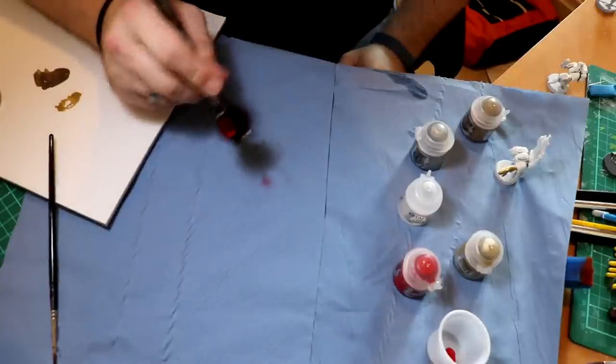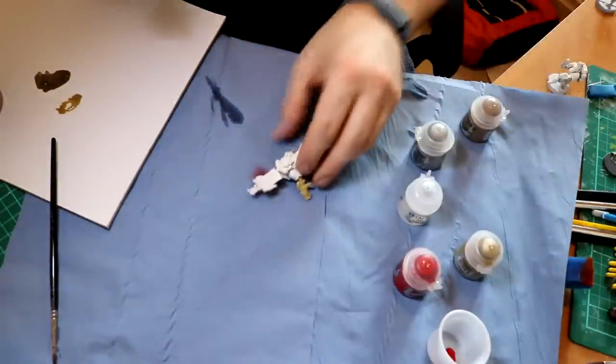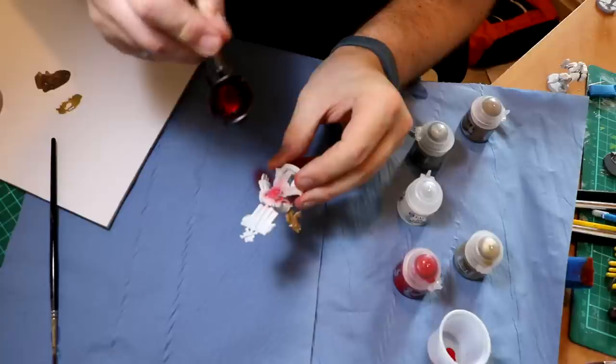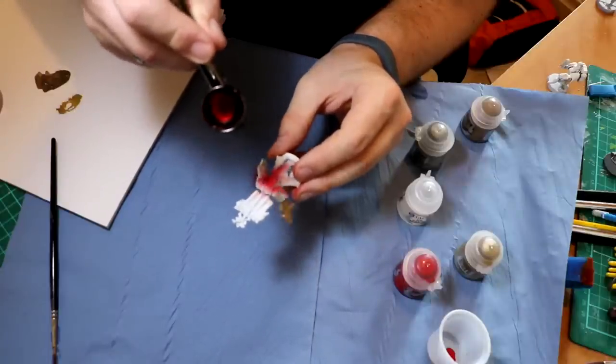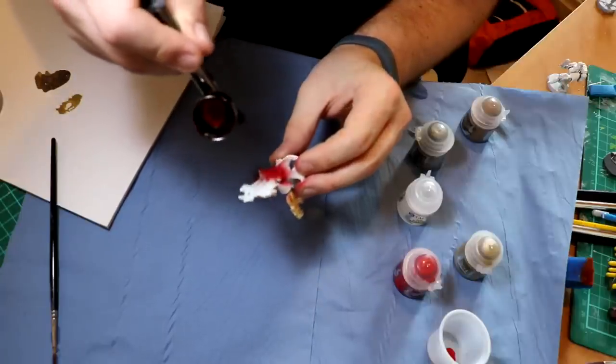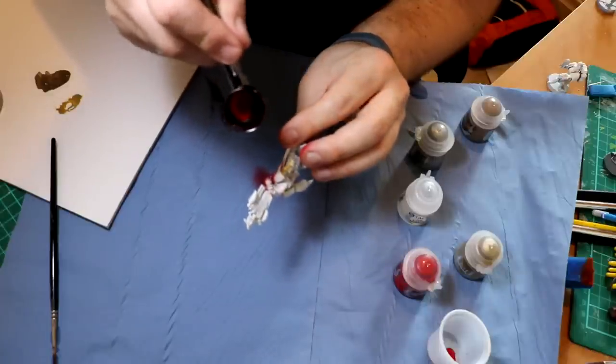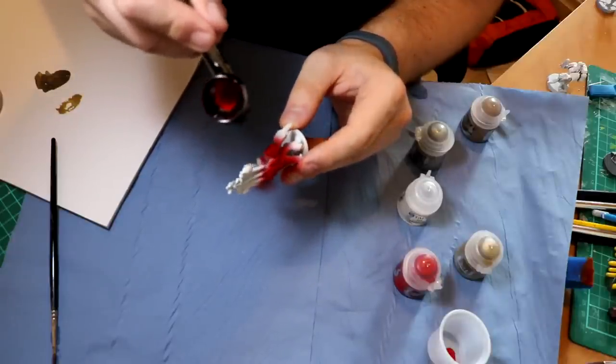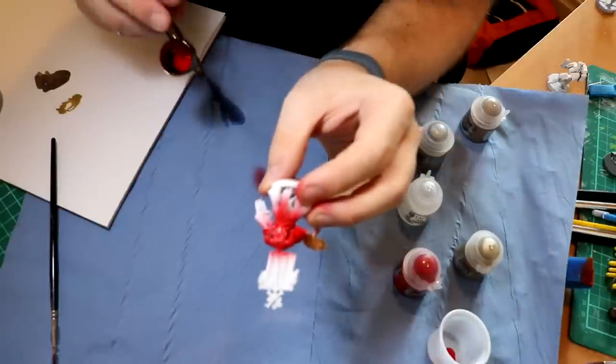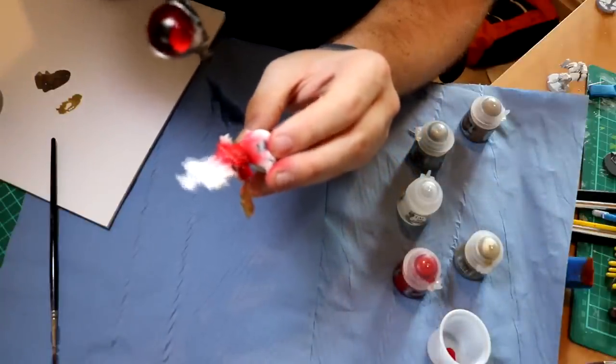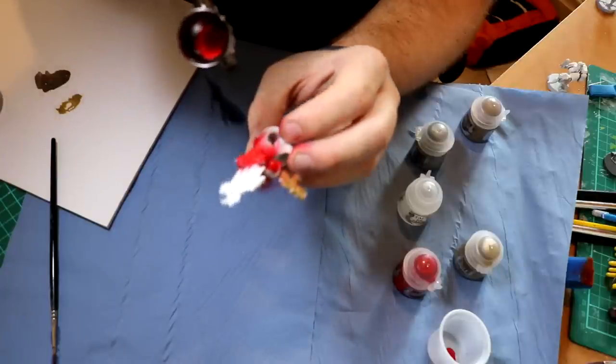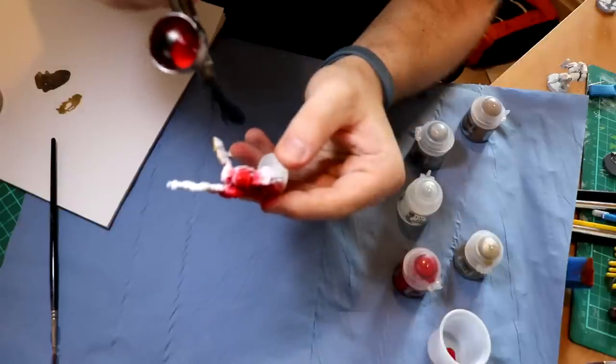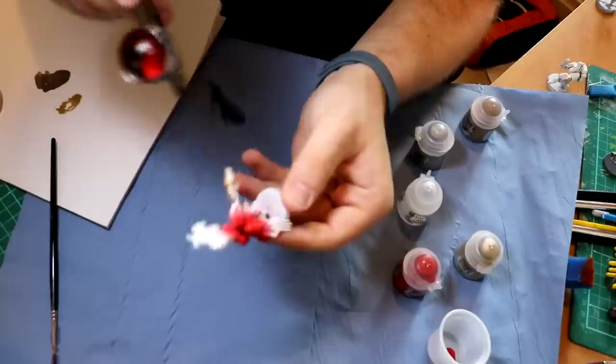So let's see how we get on. It is covering really nice. Really strong colors coming through with this Mephiston red. It's gone on nice and thin so I'm not going to lose any detail and it doesn't take a great deal to cover the area. I'm pushing not a lot through so the pigment's got to be quite strong in this, which is really nice to see.